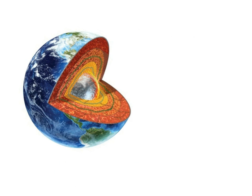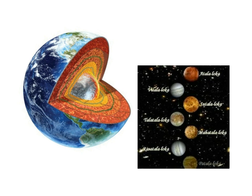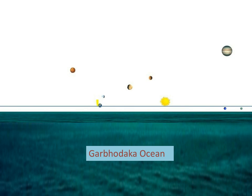Now let's open up the Earth and see what's underneath. We can see there are various types of subterranean realms and caverns in the Earth, and it's understood that somehow one can access the lower planetary systems through this way — Atala Loka, Vitala Loka, Sutala, and so on. Looking at a close-up of the side of the planetary system, the lower planets occupy the realm between the Garbhodaka Ocean and Brahmandala itself.